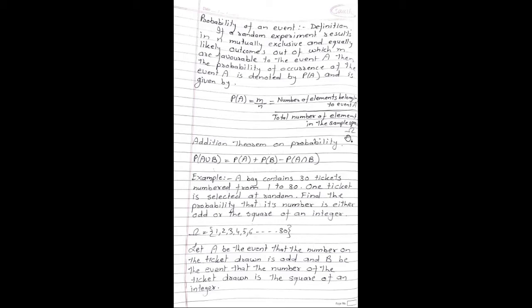An important theorem on probability: the addition theorem on probability states that P(A union B) is equal to P(A) plus P(B) minus P(A intersection B). See the example based on this concept.